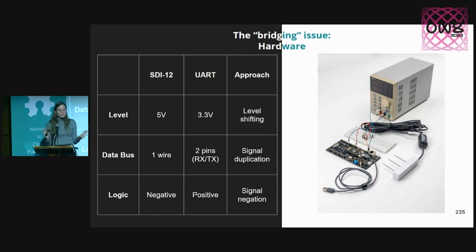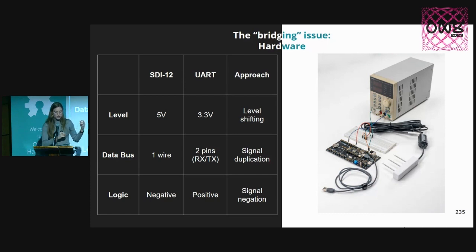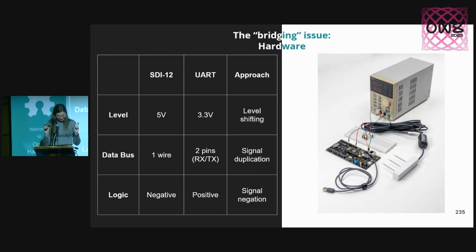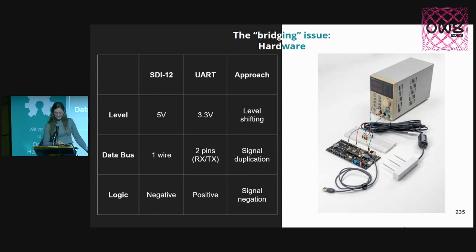Here's my quick compatibility table bridging old and new. SDI-12 uses 5V for data communication while UART and most modern electronics use 3.3V — solution: use a level shifter. SDI-12 uses one wire while UART needs two pins (RX and TX) — solution: duplicate the signal. SDI-12 uses negative logic while UART uses positive — solution: invert it. The challenge is doing all three at the same time, and that's where the sweat starts.